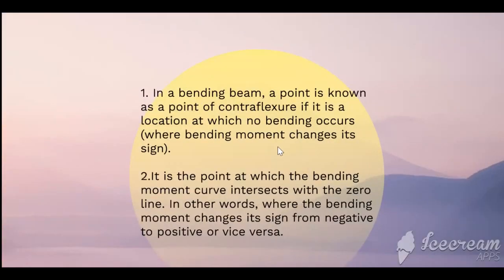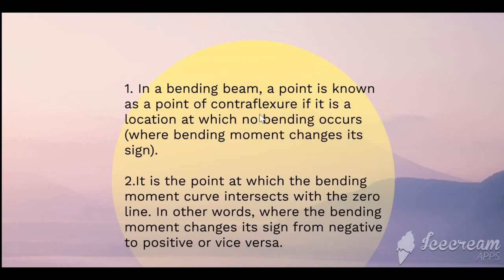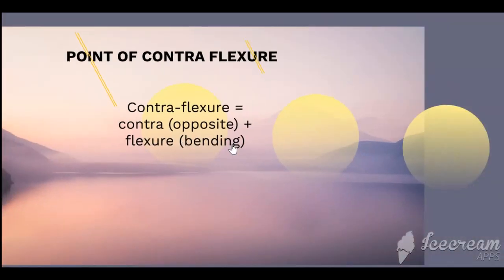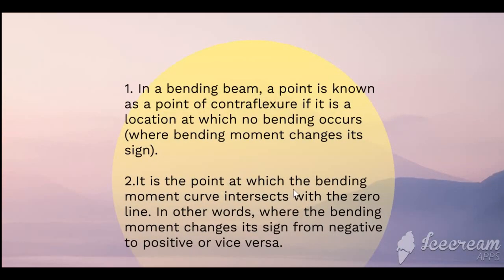In a bending beam, a point is known as a Point of Contra Flexure if it is a location at which there is no bending moment and where the bending moment changes its sign. To the left of point P the bending moment is positive, and to the right of P the bending moment is negative. P is therefore the point where the bending moment curve intersects the zero line — where the bending moment changes sign from negative to positive or vice versa.